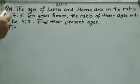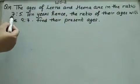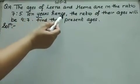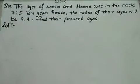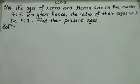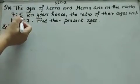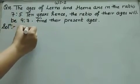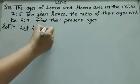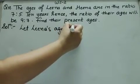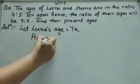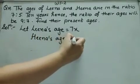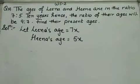Question 19: The ages of Lina and Hina are in the ratio 7:5. Ten years hence, the ratio of their ages will be 9:7. Find their present ages. The ratio given is 7:5. Whenever ages are given in ratio, we suppose 7X for Hina and 5X for Lina.